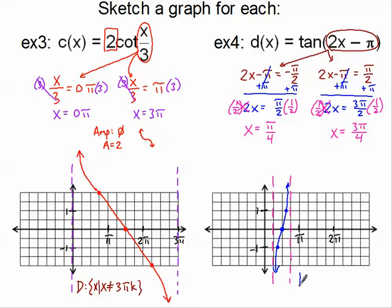One last domain to practice: all x such that x is not equal to. I pick the first asymptote, which is pi over 4, and add a multiple of however far apart the asymptotes are, which is pi over 2. So the domain is all x such that x is not equal to pi over 4 plus pi over 2 k. Hopefully you understand how to do these through these four graphs. If not, make sure you have questions for when we practice in class. See you then.